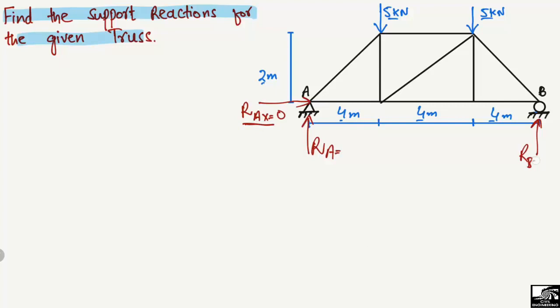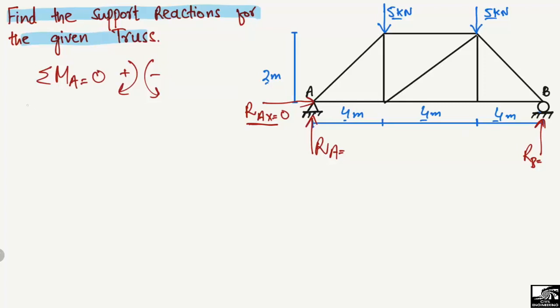To find RA and RB, we use the equilibrium equations. We take the summation of moments at point A equal to zero, with clockwise moments taken as positive and anti-clockwise moments as negative. Recall that moment equals force multiplied by the moment arm.